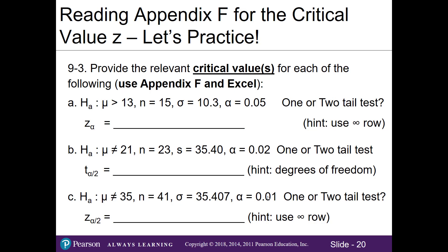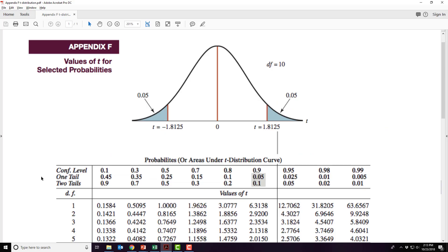Let's do Problem 3, finding relevant critical values using Appendix F and Excel. In Part A, the alternative hypothesis states the population mean is greater than 13, with a given sample size, population standard deviation, and alpha value. Since the alternative hypothesis states greater than, it points to the upper tail — so this is a one-tail test. Since we have the population standard deviation symbol sigma, we know it and we'll look for a critical Z value in the infinity row of Appendix F.